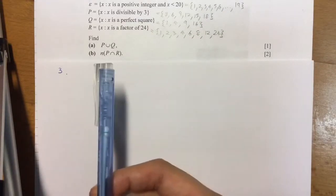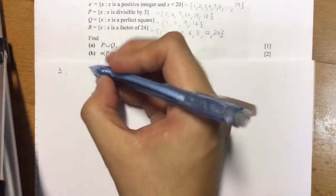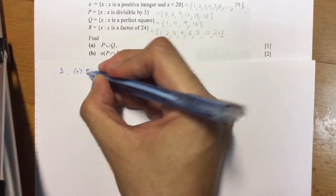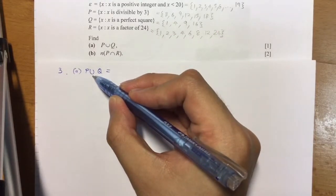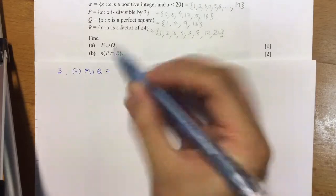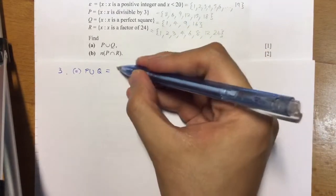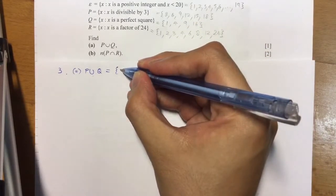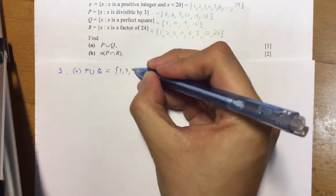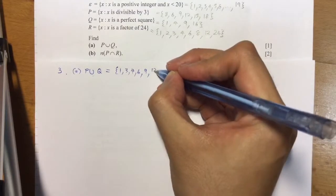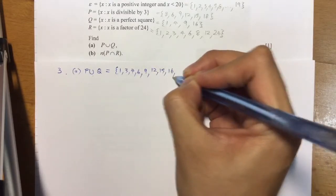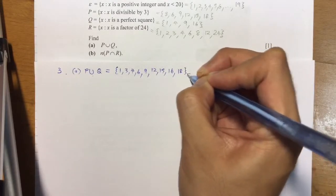Now question (a): P union Q. Union means I want everything inside P and everything inside Q. So you see, after listing out all, I have to do is just copy it down in ascending order: 1, 3, 4, 6, 9, 12, 15, 16, and 18. That's it.